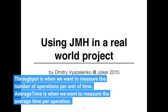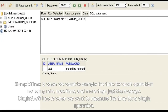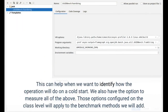Throughput is when we want to measure the number of operations per unit of time. Average time is when we want to measure the average time per operation. Sample time is when we want to sample the time for each operation, including min, max time, and more than just the average. Single shot time is when we want to measure the time for a single operation, which can help when we want to identify how the operation will do on a cold start.